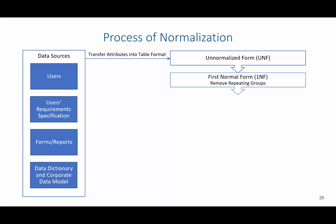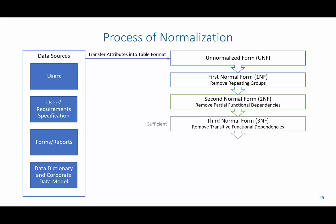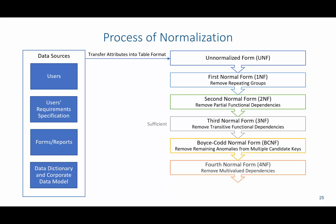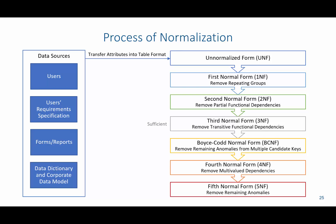Then we're going to move to first normal form by removing repeating groups. Then we're going to move to second normal form by removing partial functional dependencies, and then to third normal form by removing transitive functional dependencies. Third normal form is typically sufficient and as far as we will go. However, there is Boyce-Codd normal form, fourth normal form, and fifth normal form, which you're welcome to learn more about on your own.